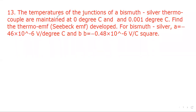Question number 13. Temperatures of the junctions of the bismuth-silver thermocouple are maintained at 0 degrees centigrade and 0.001 degrees centigrade. Find the thermo-EMF developed, where A equals minus 2.6 into 10 to the power minus 6 per degree centigrade and B equals minus 0.28 into 10 to the power minus 6 per degree centigrade squared.